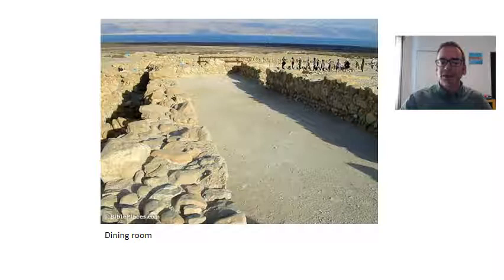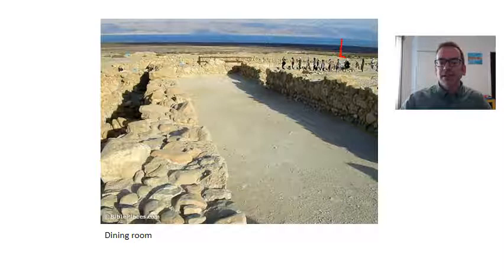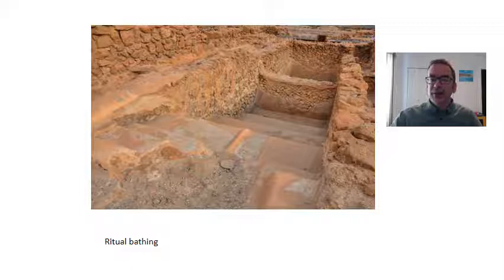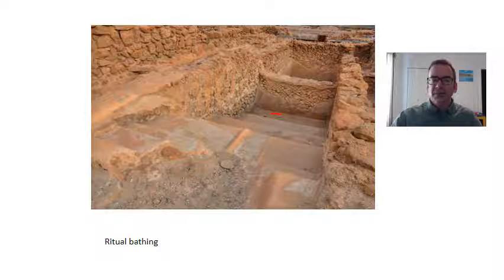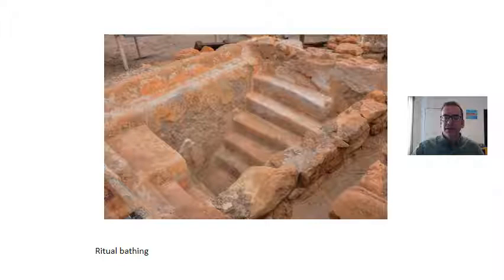This is the dining room — you can see people in the background to gauge the size of the room. The Essenes were also very focused on ritual baptism. There are steps leading down into pools where they would direct water and baptize themselves. Here's another example showing stairs leading down into a pool that would have been completely filled with water.